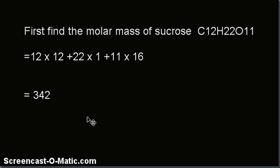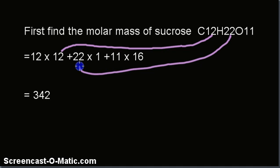First, find the molar mass of sucrose C12H22O11. The atomic mass of carbon is 12, so 12 atoms multiplied by 12. Then we have 22 hydrogen atoms, atomic mass of hydrogen is 1, so 22 × 1. Similarly, the number of oxygen atoms is 11 and the atomic mass is 16, so 11 × 16. The total comes to 342, which is the molar mass of sucrose.